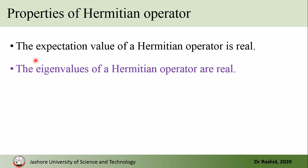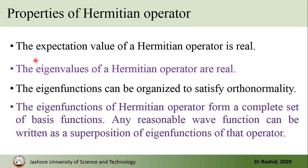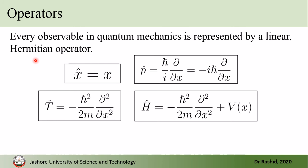We also studied that the Hermitian operator has a real expectation value, and the eigenvalues of the Hermitian operator are also real. The eigenfunctions of the Hermitian operator can be organized so that they satisfy orthonormality — they can be normalized and their overlap between the two eigenfunctions is zero. The eigenfunctions form a complete set of basis functions, so a reasonable wave function can be written as a superposition of the eigenfunctions. Here are some examples of operators: x-hat is the position operator, p-hat is the momentum operator, this is the kinetic energy operator, and H-hat is the Hamiltonian operator.